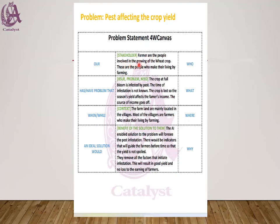Farmers are the people involved in growing the wheat crop — these are people who make their living by farming. In the Who block, you identify the stakeholders and describe what we know about them. In the What block, the question is: what is the problem and how do you know it is a problem? The answer can be: the crop at full bloom is infested by pests, the time of infestation is not known, the crop is lost, the season's yield affects the farmer's income, and their source of income is lost. You can elaborate further as you understand the situation.